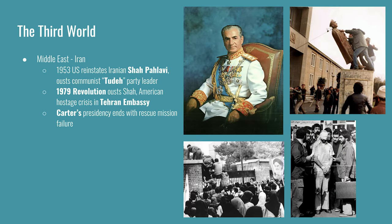The Middle East underwent a similar process of decolonization. Though Iran had maintained its independence through the imperialism period, they had internal conflict and military coups. After World War II, Iran was ruled as a constitutional monarchy by the Pahlavi dynasty. In 1953, there was an attempted coup against Reza Shah Pahlavi, blamed on the prime minister who was the leader of the communist Tudeh party. The US and the United Kingdom reinstated the Shah and had the communist party leader arrested and tried for treason. A Shah-friendly prime minister was appointed, and the Shah ruled as an autocratic dictator for another 26 years until 1979.